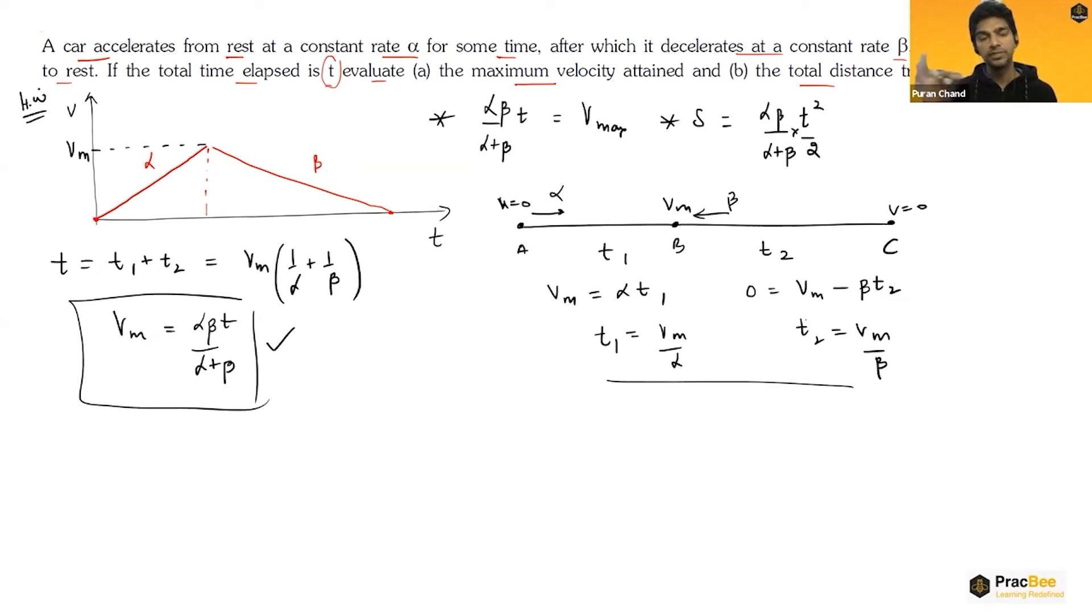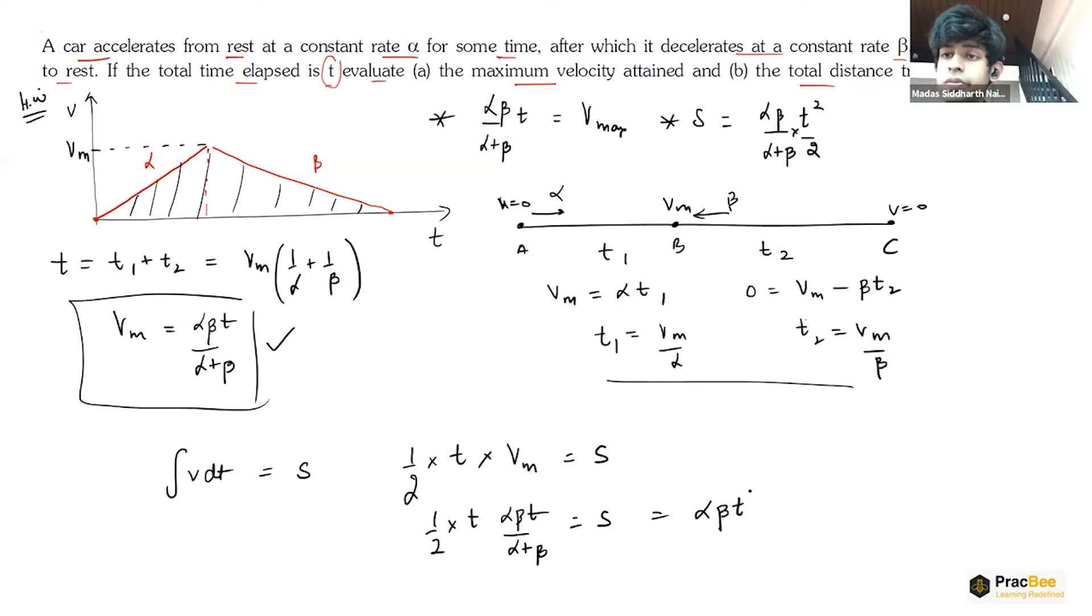Now if you want to find the total distance, you can see that the car does not change the direction of motion, it is always moving in the right direction. So the distance covered as well as the displacement both will be same. The area under velocity time graph will give you the total displacement. Integral v dt is your total displacement. So if I take the area, it will be half into base, base is time, and height is vm. Half into t and vm is alpha beta t upon alpha plus beta. So that comes out to be alpha beta t squared by two alpha plus beta.